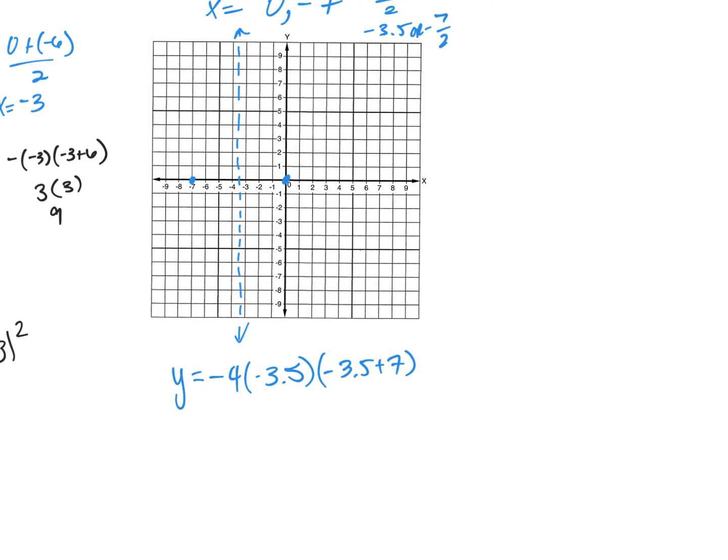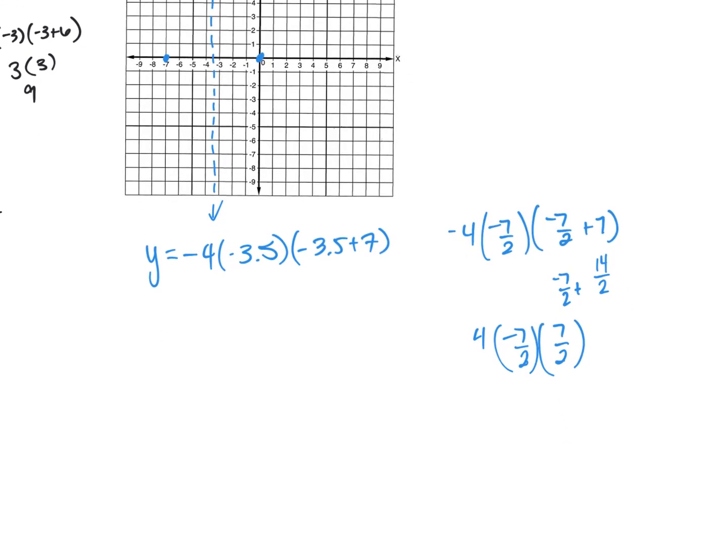Y equals negative four times negative 3.5 times negative 3.5 plus seven. Let me show you how this is easier with fractions. Negative four times negative seven halves, negative seven halves plus seven. Negative seven halves plus seven, that's 14 over two. Is seven also 14 divided by two? Yes. So negative seven halves plus 14 halves is positive seven halves.